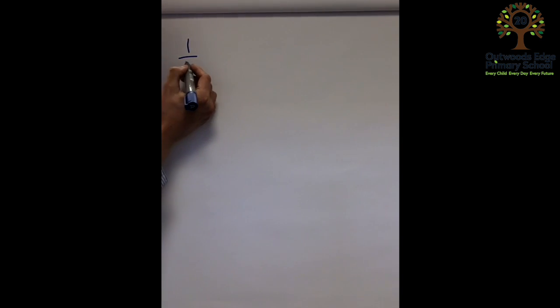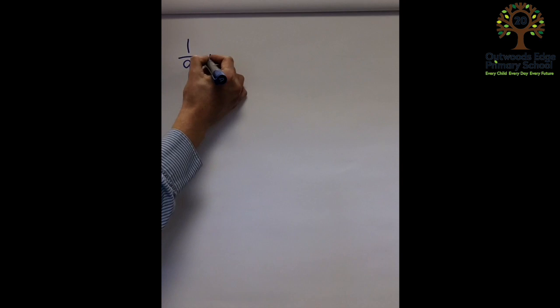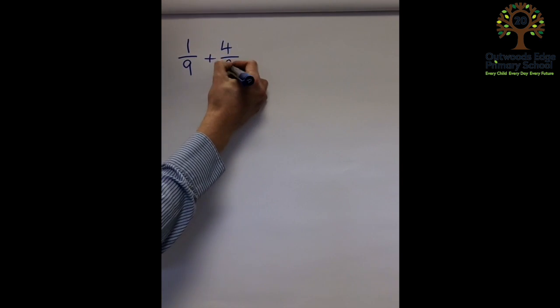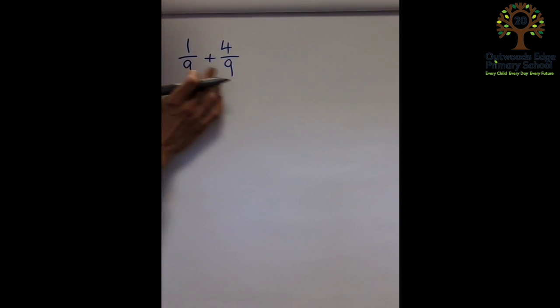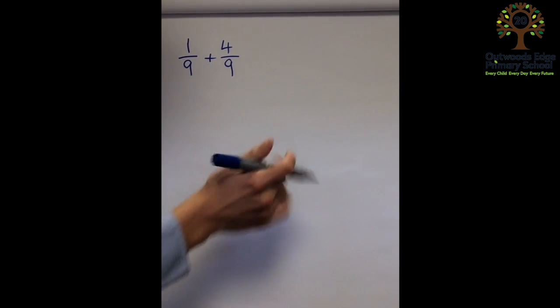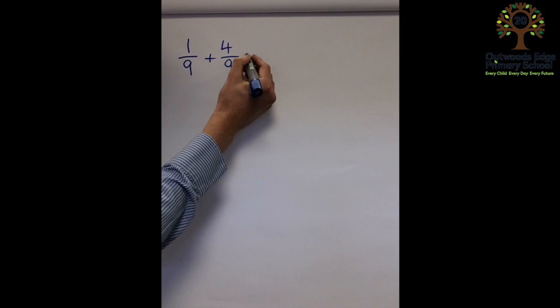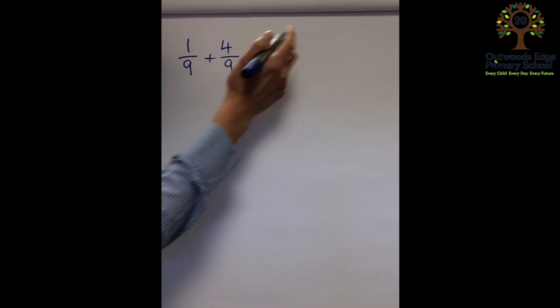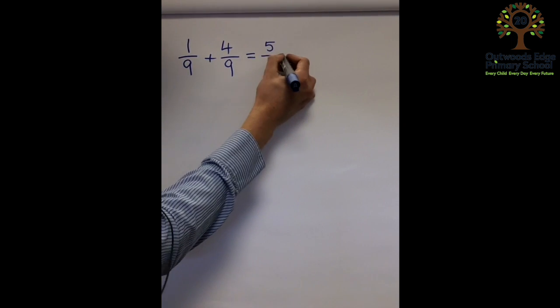For example, the first one on the board here, we've got one-ninth add four-ninths. The children have got to focus on the fact that the denominator is the same. If the denominator is the same, it's easy, we've not got to do anything. We just add the numerator at the top, one add four is five-ninths.